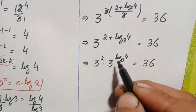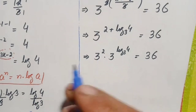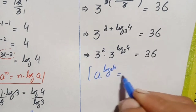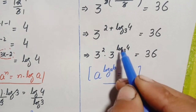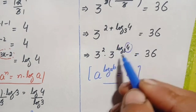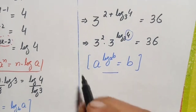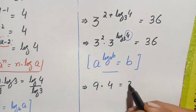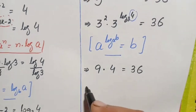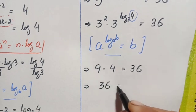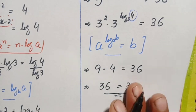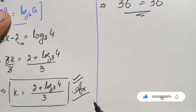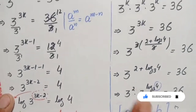Using the logarithm result that a raised to power log base a of b equals b, the term 3^(log₃4) simplifies to 4. So the left hand side becomes 3² times 4, which is 9 times 4 equals 36. Since both sides equal 36, k = (2 + log₃4)/3 is confirmed as the exact and correct answer.